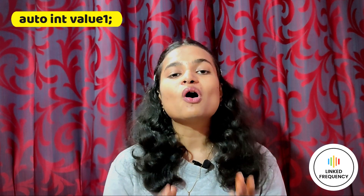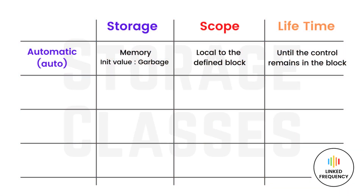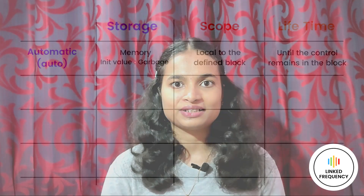The keyword used is auto. For example: auto int value1. The overall features of an automatic variable are: storage is in memory, the default initial value is a garbage value, the scope is local to the block in which the variable is defined, and the lifetime lasts while the control remains in the block where the variable is defined.